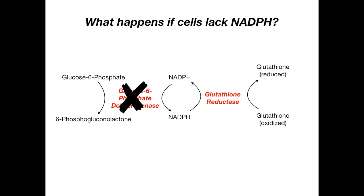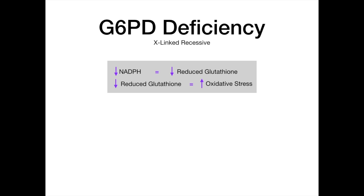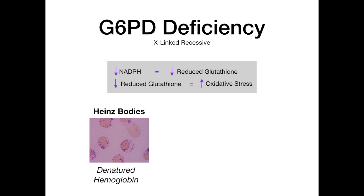The very high yield disease here is G6PD deficiency. This is an X-linked recessive disease. The key findings: you can't make NADPH, so you get no reduced glutathione, which means increased oxidative stress. A high yield finding you should know is Heinz bodies—little clumps of denatured hemoglobin that accumulate inside red blood cells due to the oxidative damage occurring within the RBC.